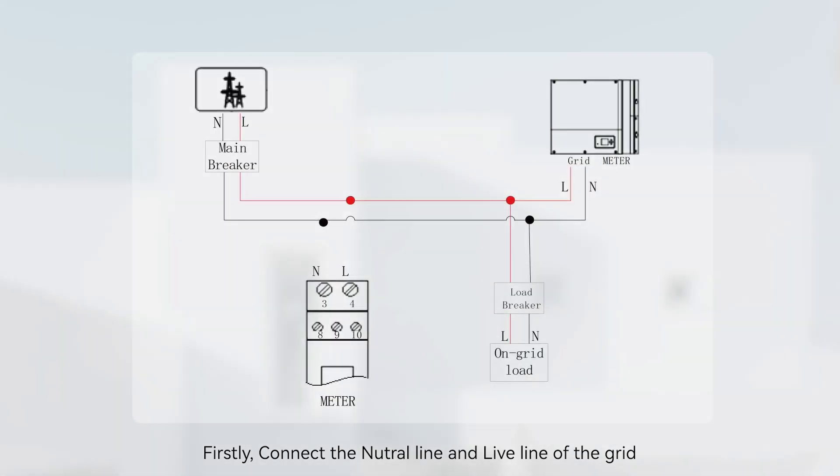First, connect the neutral line and live line of the grid to port 3 and port 4 of the smart meter.